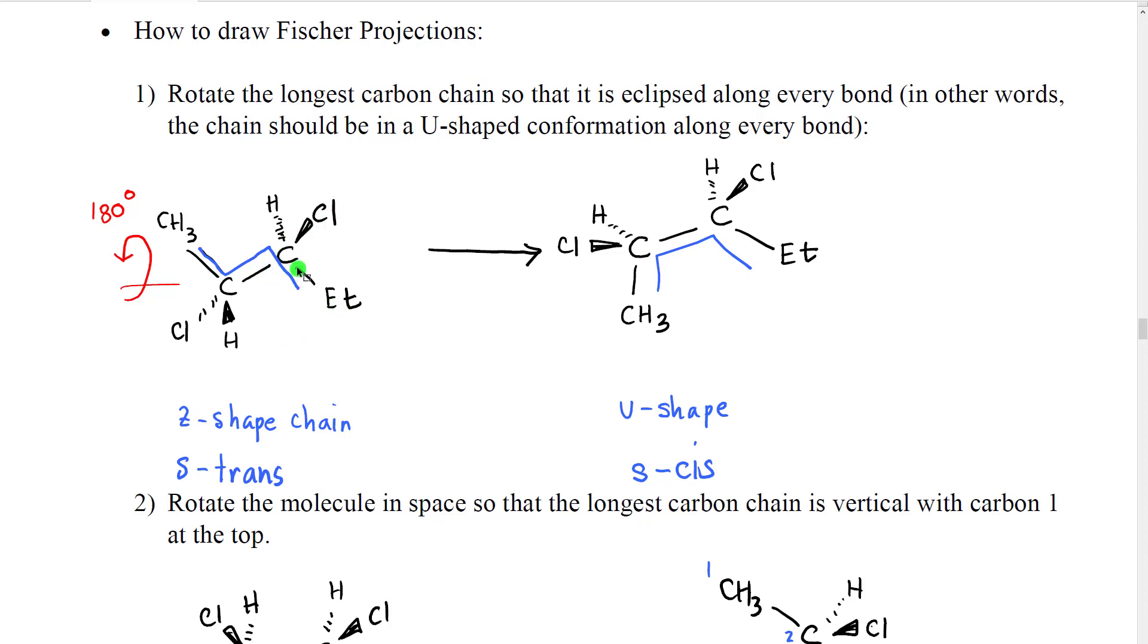What we can do then is we can rotate one of these groups. In my example I've rotated the left-hand group 180 degrees around this bond and what that does then is that makes the chain take on a U shape, which we call the S cis conformation. So what we're going to do is go along the longest carbon chain, rotate one bond into the U shape, then go to the next bond, rotate it into the U shape. We're just going to continue until all of the bonds in the entire carbon chain are in the S cis or U shaped conformation.